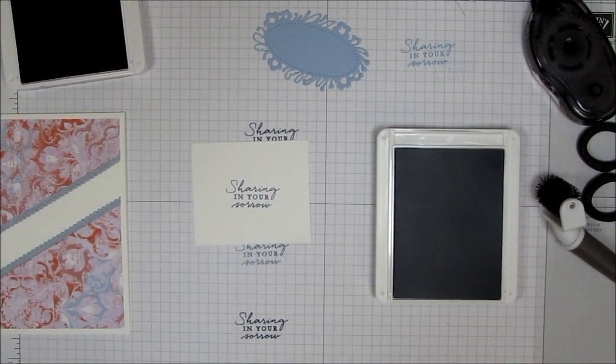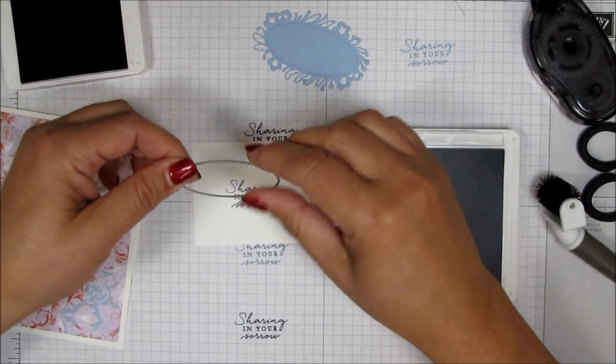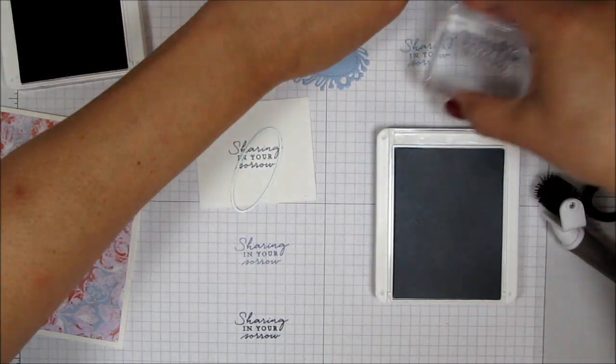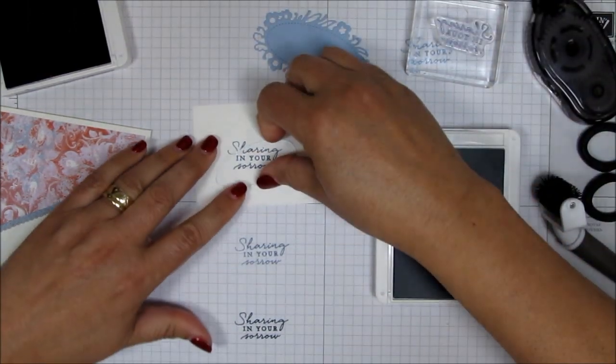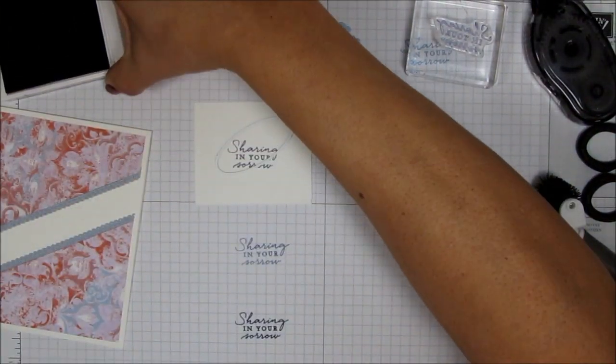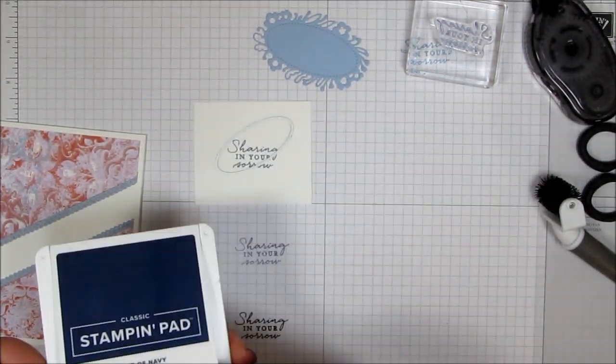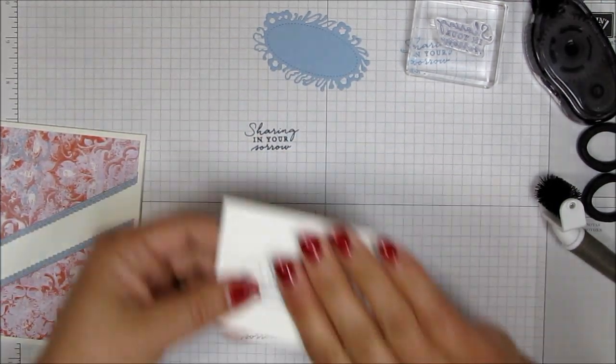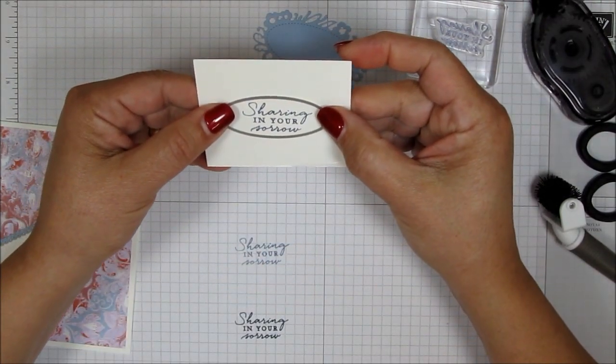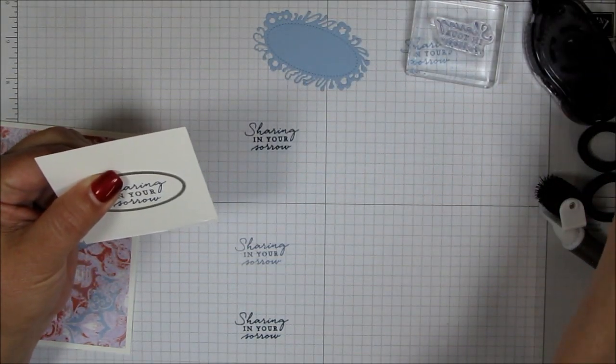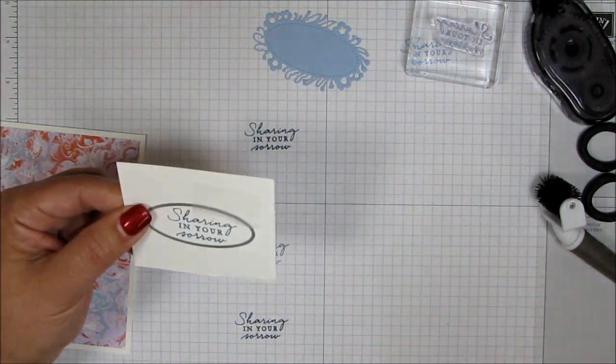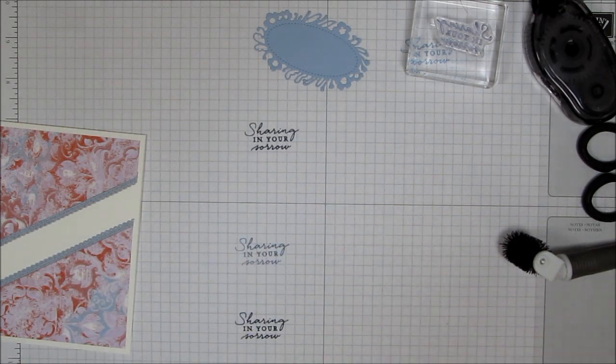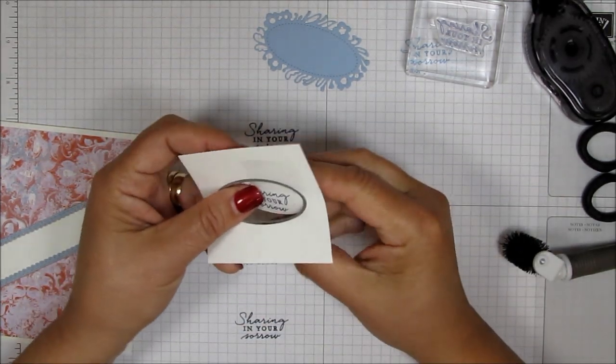And I'm going to use the oval die that comes from the Petals Labels dies. Now you can actually get the Petals Labels dies and the Path of Petals as a bundle and saved 10%. And they coordinate really nicely together. So let's go ahead and close these up because I'll get my hands in them. And we're going to take this to the Big Shot or any die cutting machine. I know that Stampin' Up! doesn't sell the Big Shot machine anymore. Hopefully they'll come up with a nice die cutting machine. I'll be right back.